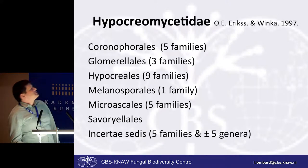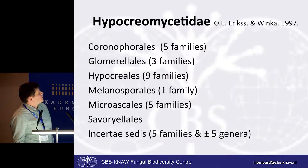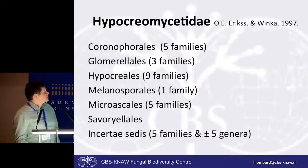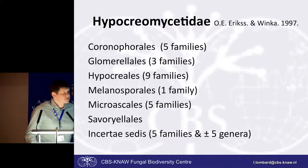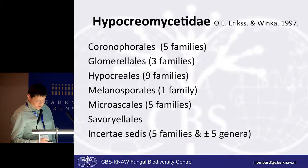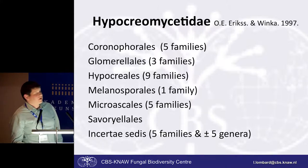The subclass is further divided into six orders: the Coronophorales, the Glomerales, the Hypocreales, the Melanosporales, the Microscalales, and the Savoreales, with several families still classified as incertae sedis, with an additional five genera which have not yet been placed in any order or family.